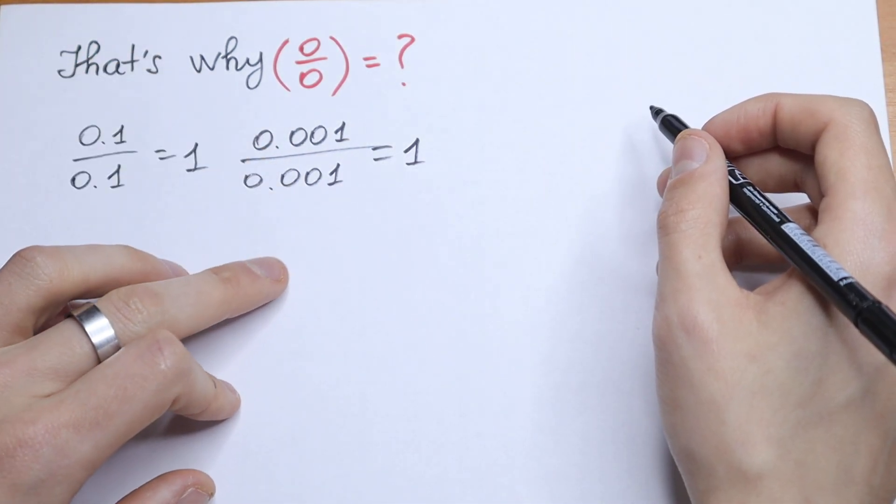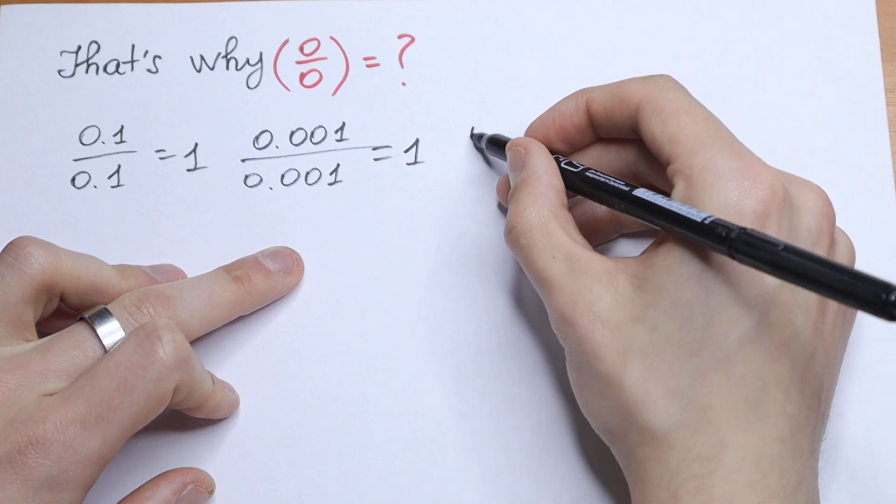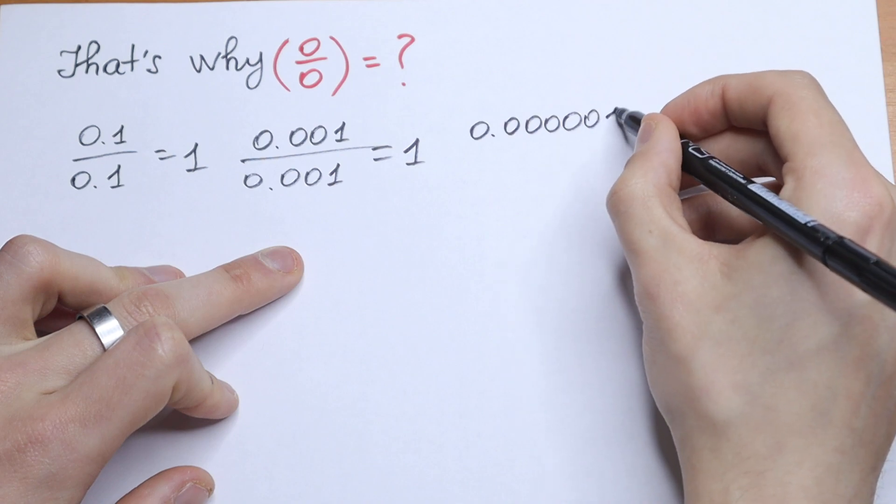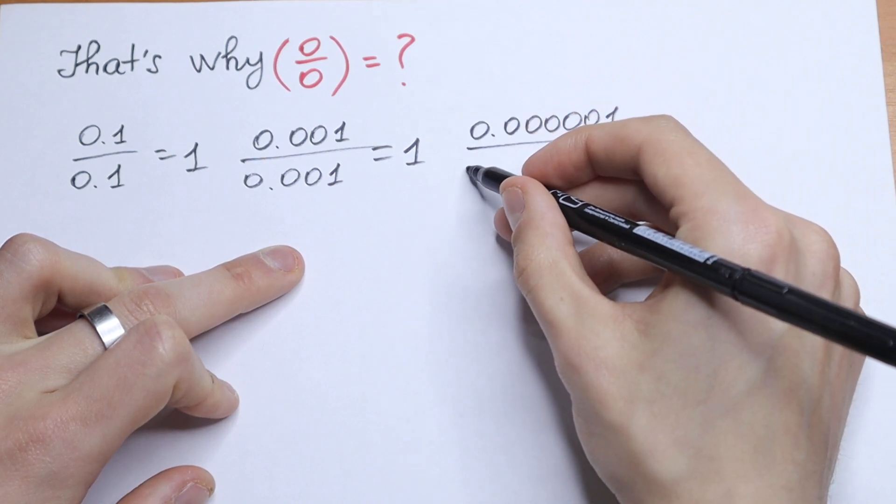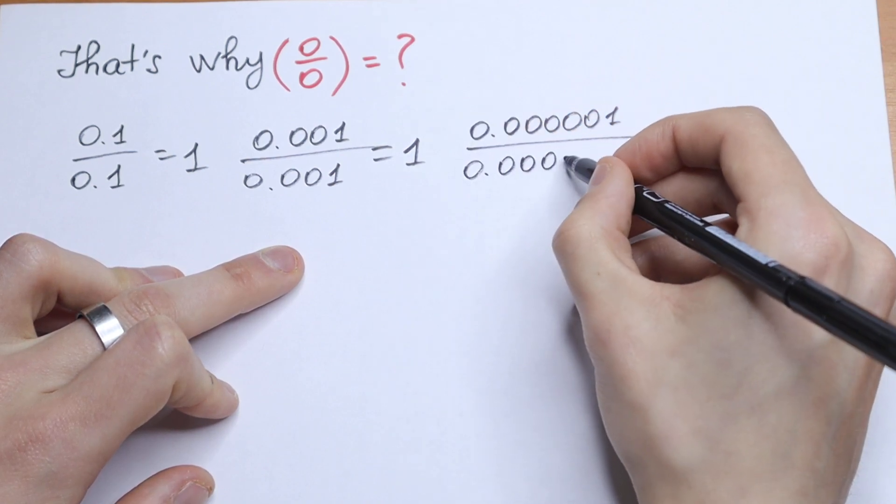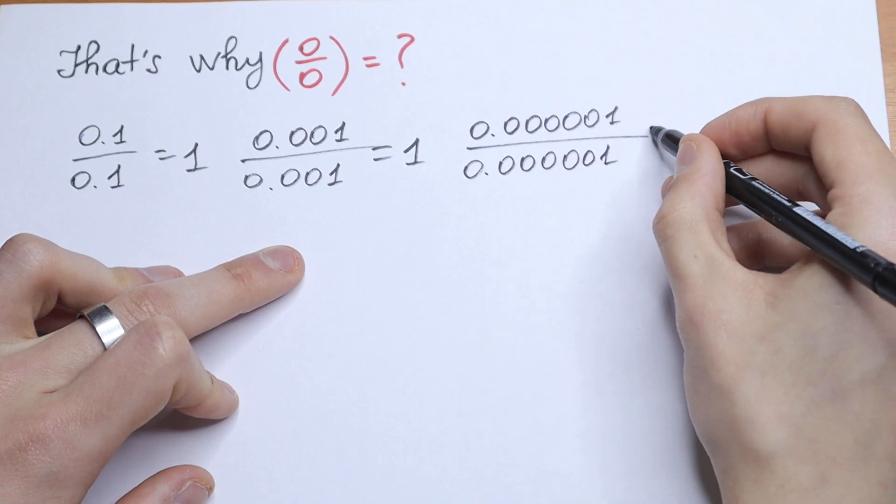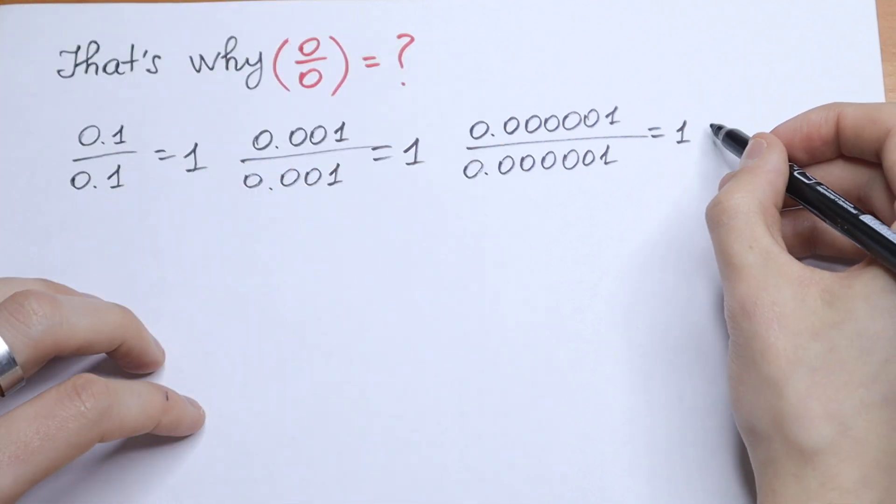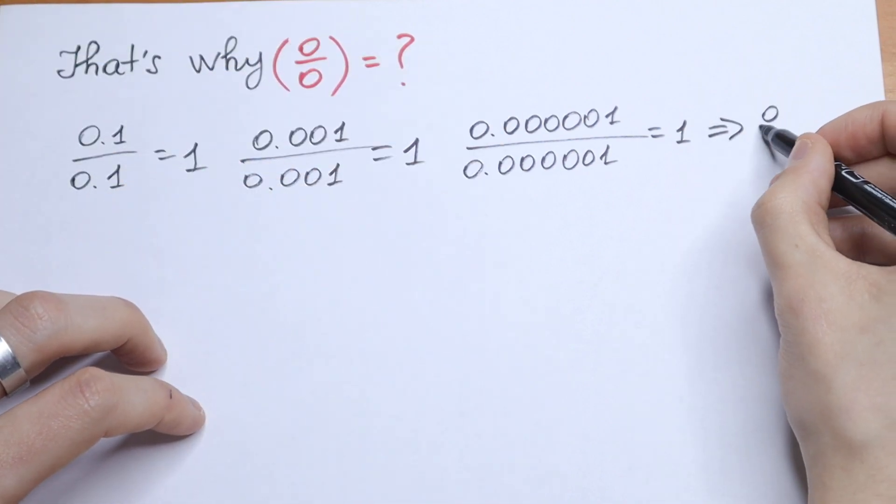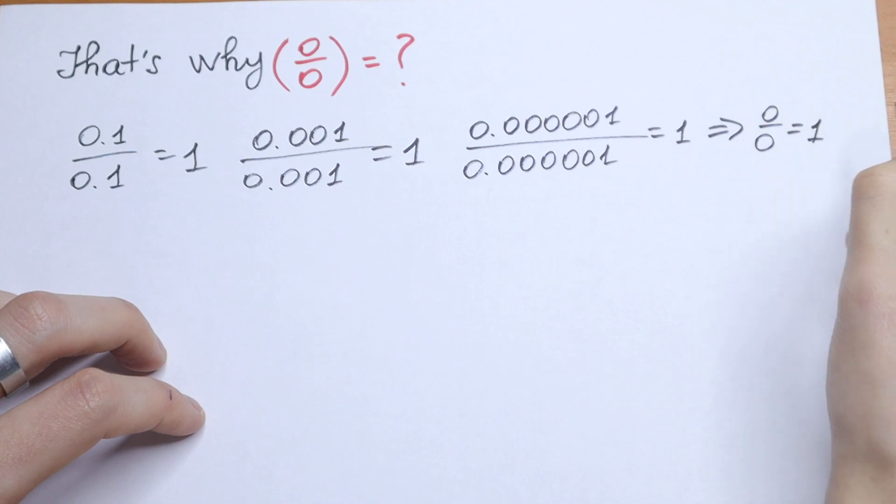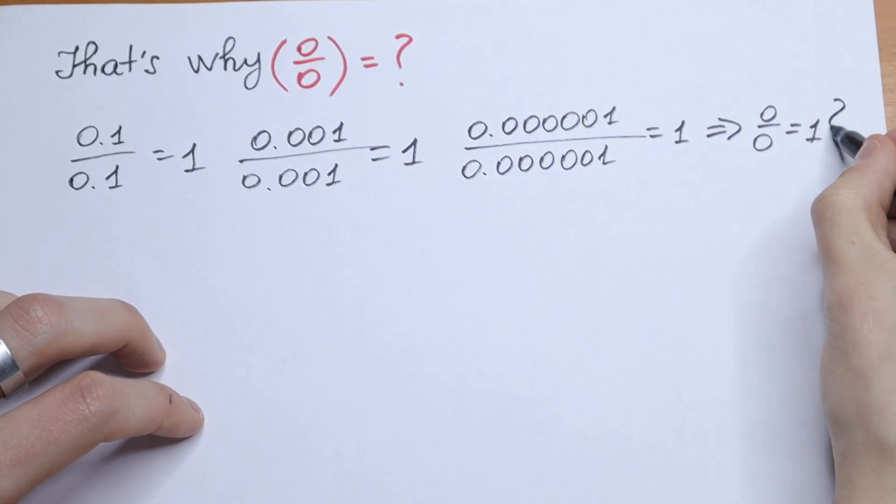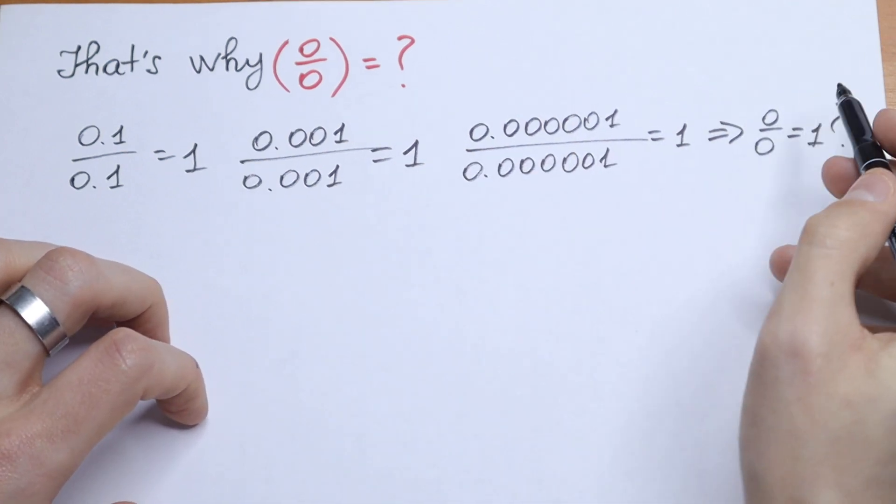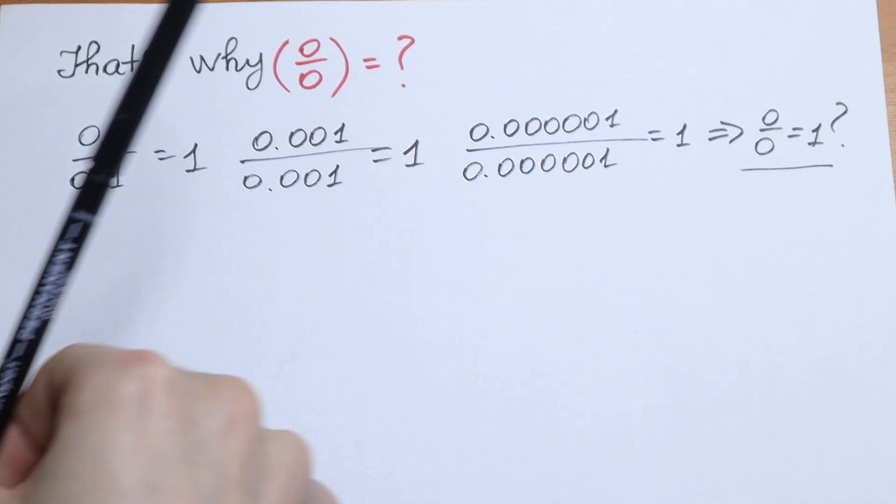And let's make one small step. So as a result we will have 0.0000001 and let's divide it by the same 0.0000001. As a result we will have as you can see 1. So by using this logic, 0 over 0 is equal to 1. As you can see 1, 1, 1, we are getting closer and closer to the 0. So from here 0 over 0 is equal to 1.